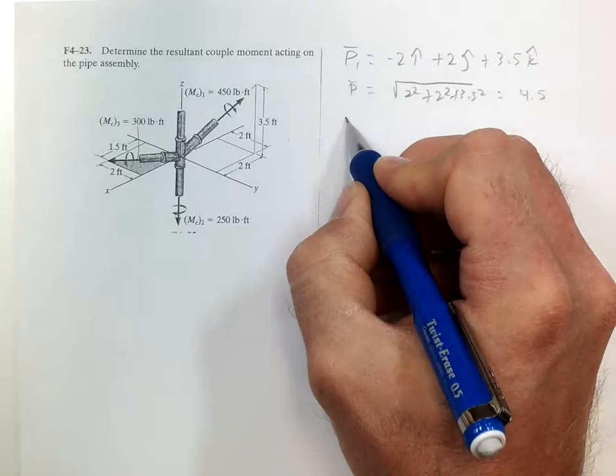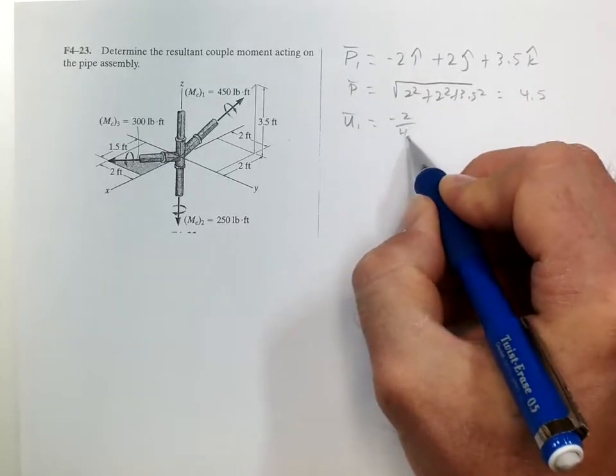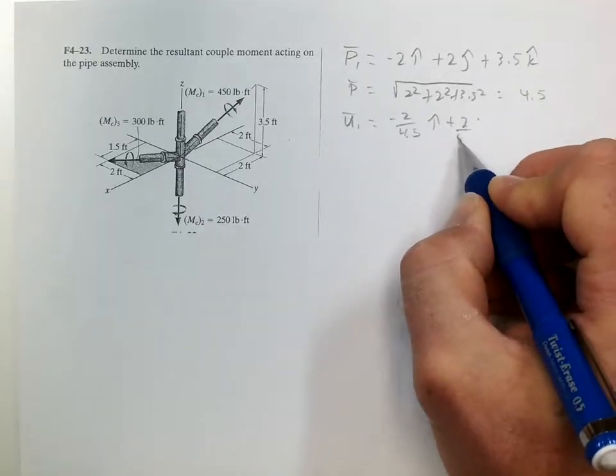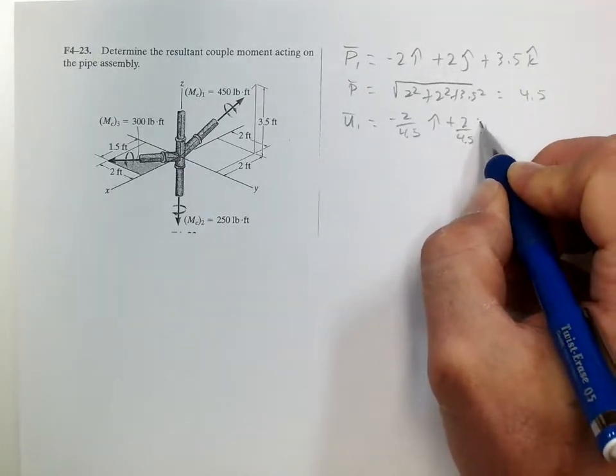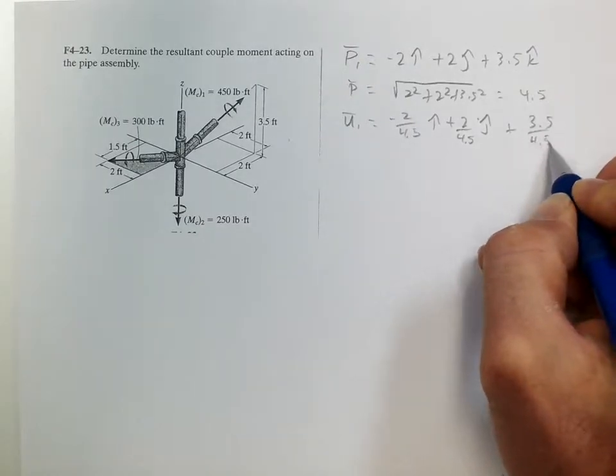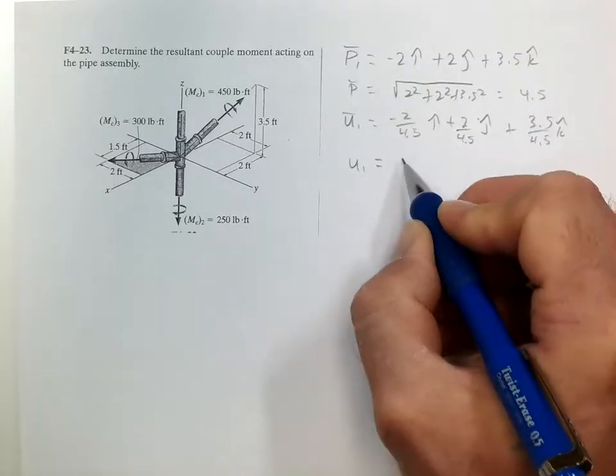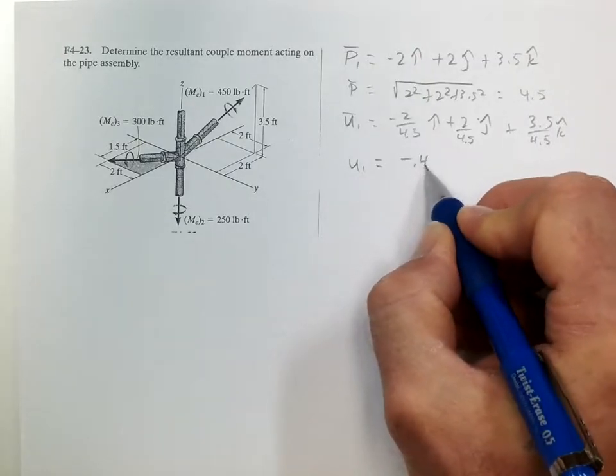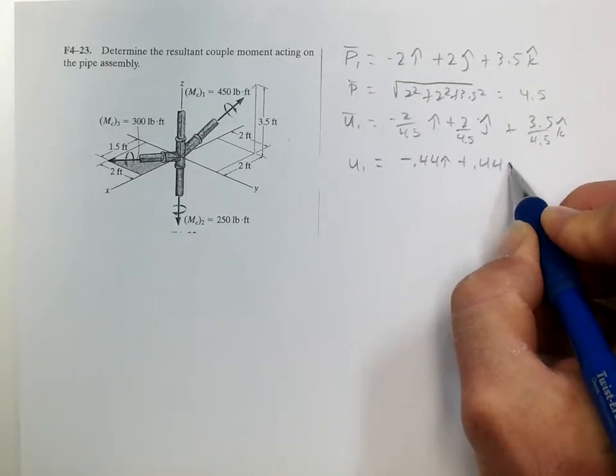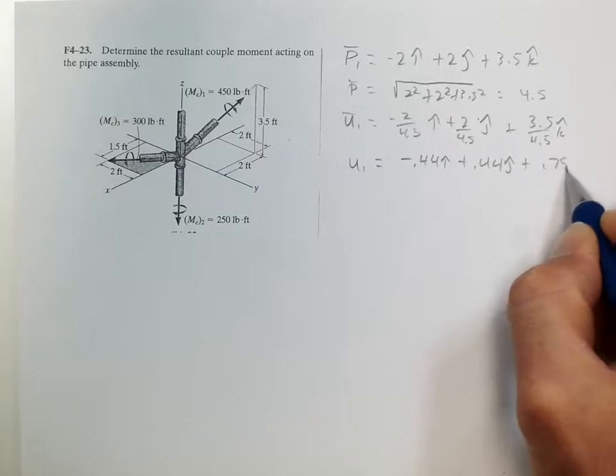Which gives us the unit vector of negative 2 over 4.5 in the i plus 2 over 4.5 in the j plus 3.5 over 4.5 in the k. And the unit vector is equal to negative 0.5 in the i plus 0.5 in the j plus 0.7 in the k.